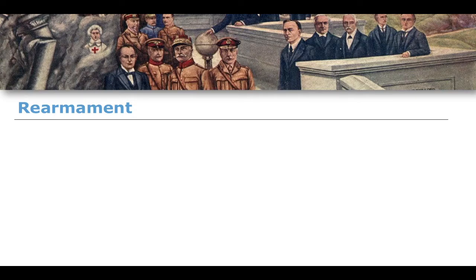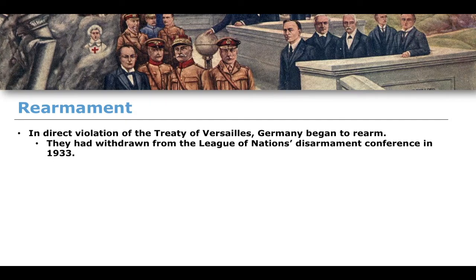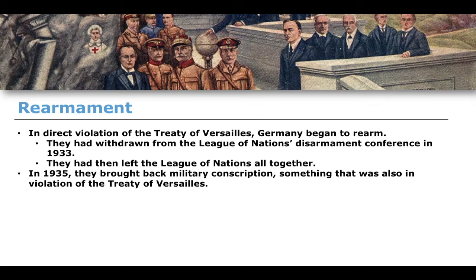Another instance of Hitler's aims being implemented early on was rearmament, which was a direct violation of the Treaty of Versailles. Germany withdrew from the League of Nations disarmament conference in 1933 and left the League of Nations altogether not long after. In 1935 they brought back military conscription — also a violation of the Treaty of Versailles — and, of course, the German army had been limited to only 100,000 troops, so introducing conscription and increasing military personnel was a clear violation.